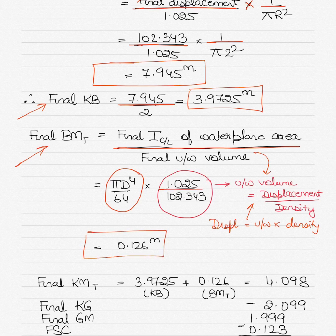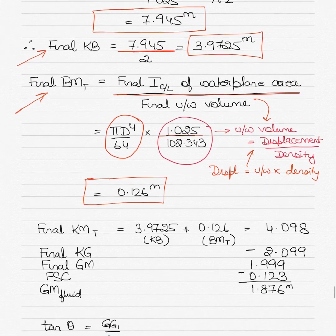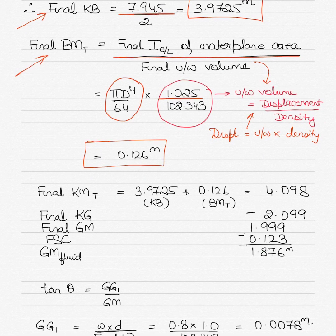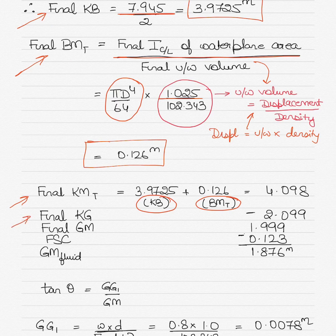Final KM transverse = KB + BM transverse. Adding the two values gives KM. Subtracting final KG from KM gives final GM solid. Then subtracting the free surface correction (0.123 m) from GM solid gives GM fluid.